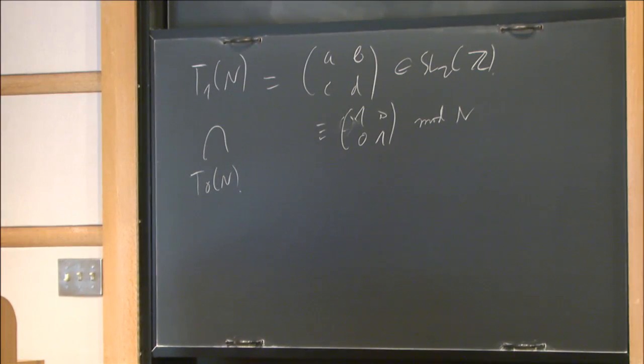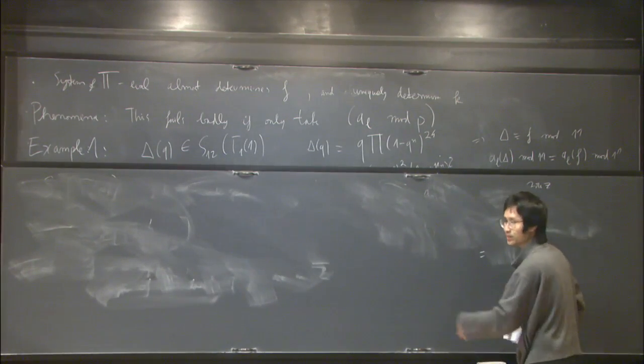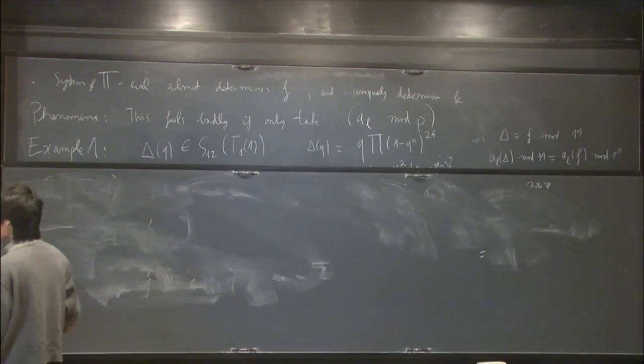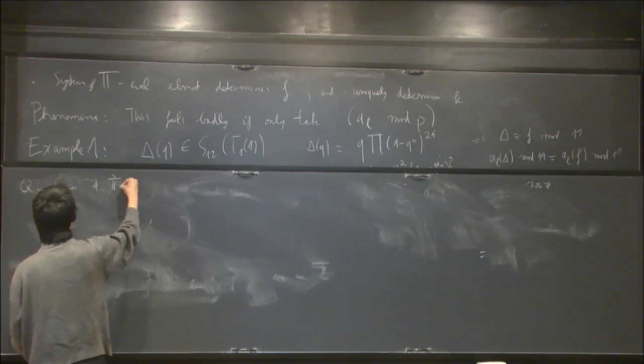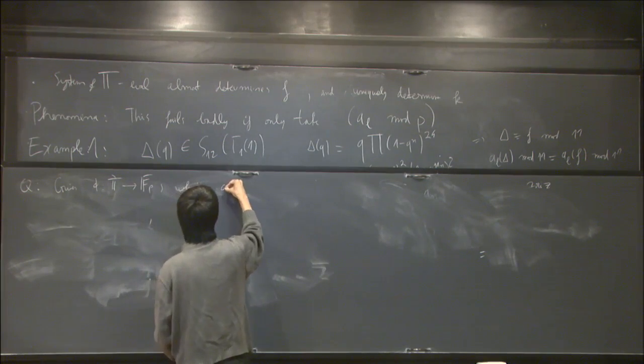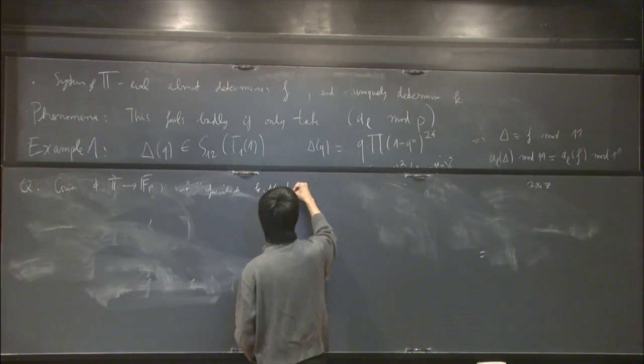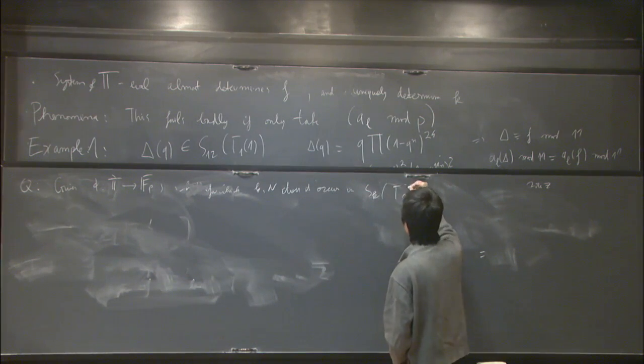This is really heavy. Okay. All right. So if you stare at this table, then basically things look kind of random. In particular, there's no obvious way you can get this list of primes based on just information you have on your form in any direct way. So the basic question is that kind of given a system of eigenvalues, for which k and n does it occur as a mod p reduction of a system in something like this?